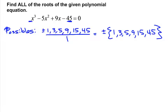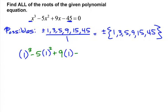We start testing those numbers. Try x equals 1: plug in to get 1 to the third minus 5 times 1 squared plus 9 times 1 minus 45. That gives us 1 minus 5 is negative 4, plus 9 is 5, minus 45 is negative 40. That doesn't equal 0, so this is no good.